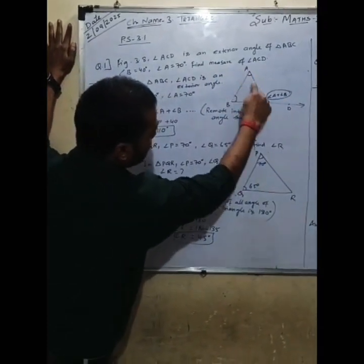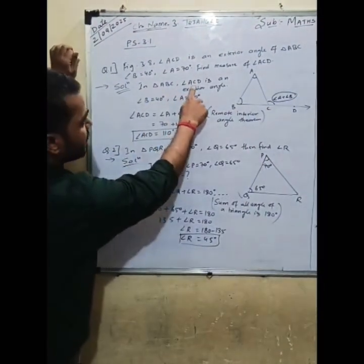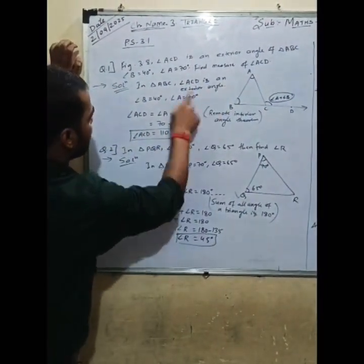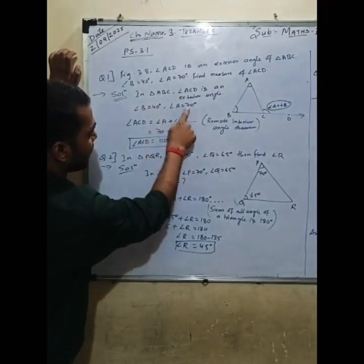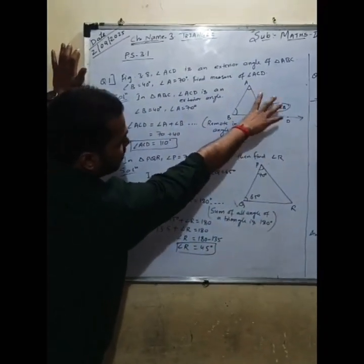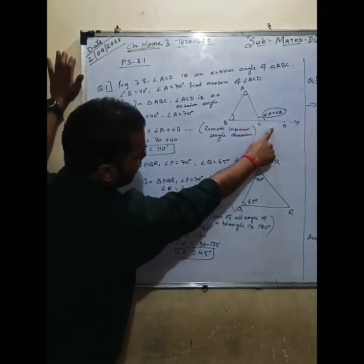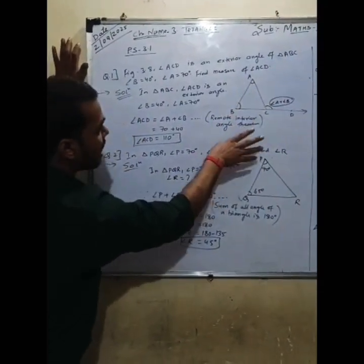In triangle ABC, angle ACD is an exterior angle. Angle B is equal to 40 degrees, angle A is equal to 70 degrees. As we know, the remote interior angle theorem states that the exterior angle is equal to the addition of the two remote interior angles.